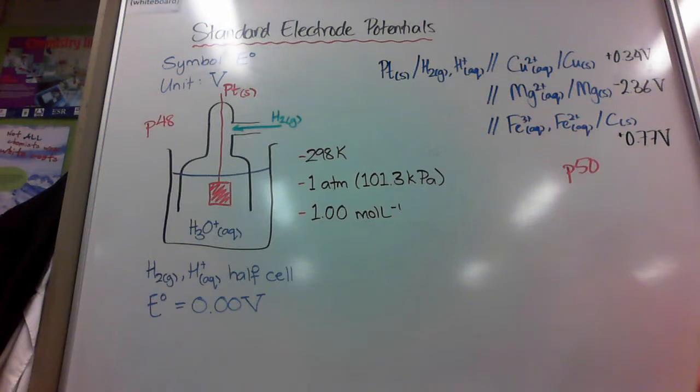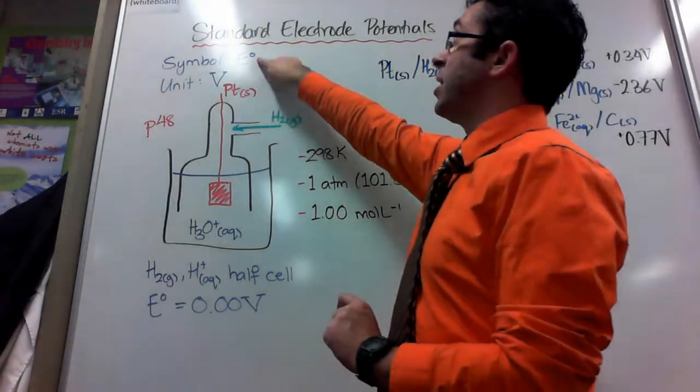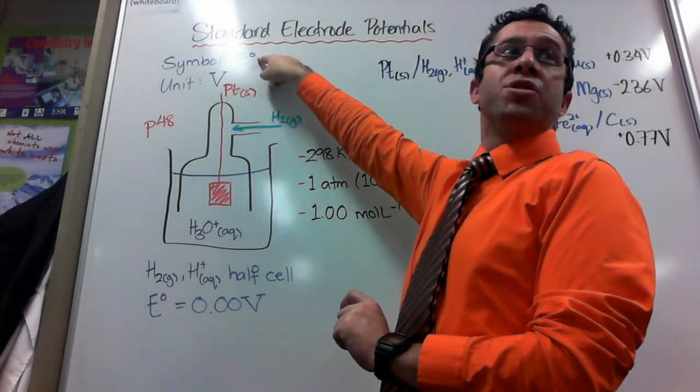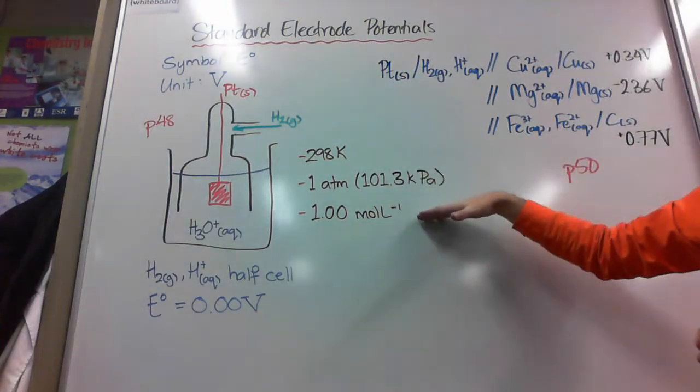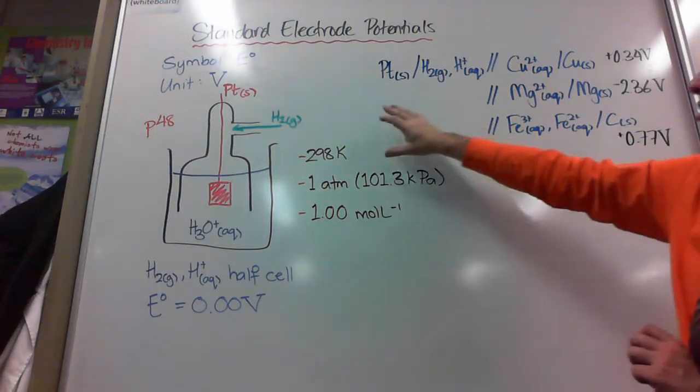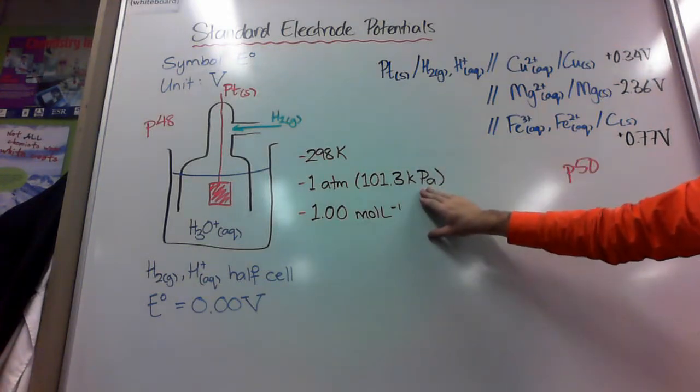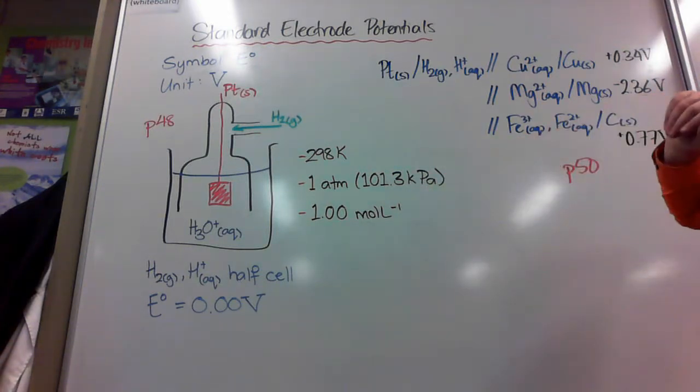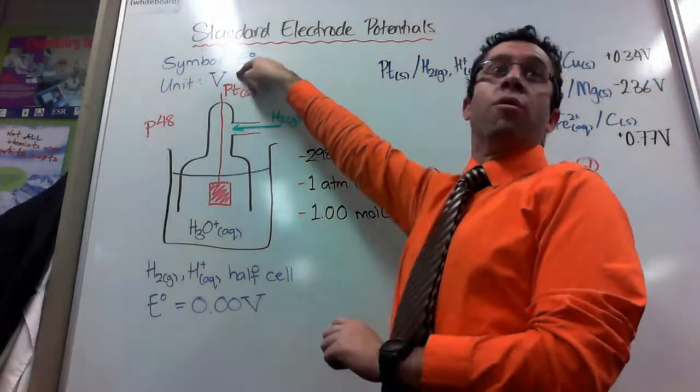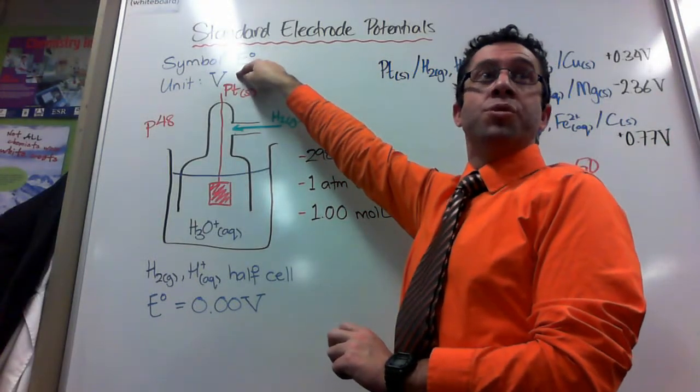One thing I forgot to mention earlier. The symbol is E with a little degree sign, which just means standard conditions. And these are the standard conditions: these three bullet points here, 298 Kelvin, 101.3 kilopascals, and 1.0 moles per liter. And the unit is one you've probably met before, which is a volt or joules per coulomb.